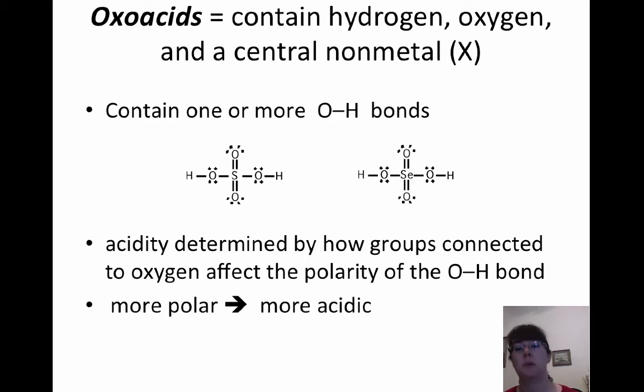The more electron density that is more evenly shared between the molecule and the hydrogens, the weaker the acid, the harder it's going to be to actually get the hydrogen to come off of the molecule. Whereas if you have more electron density pulled towards more of the molecule, less to the hydrogen, the more acidic it's going to be, which is where you get that the more polar, the more acidic.